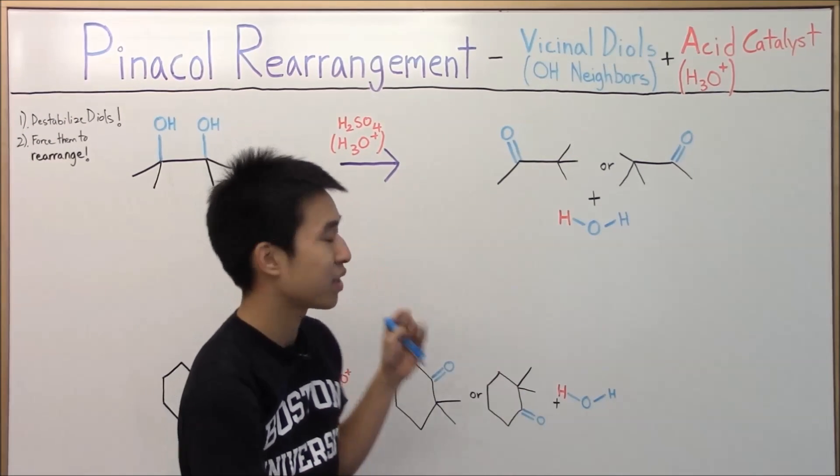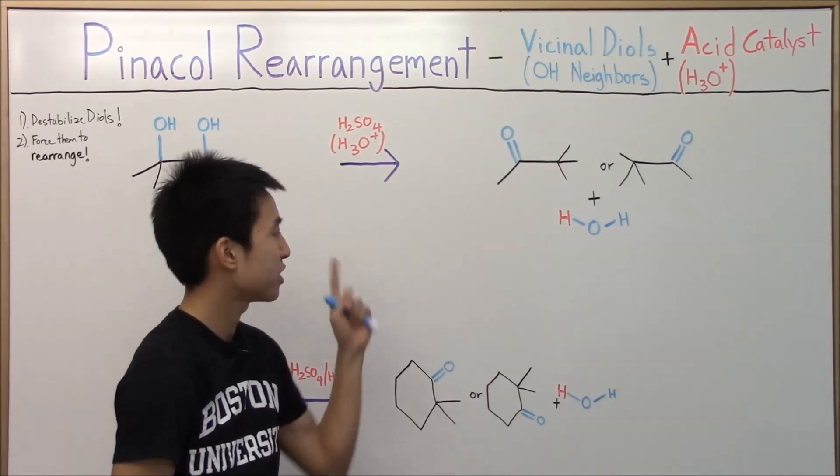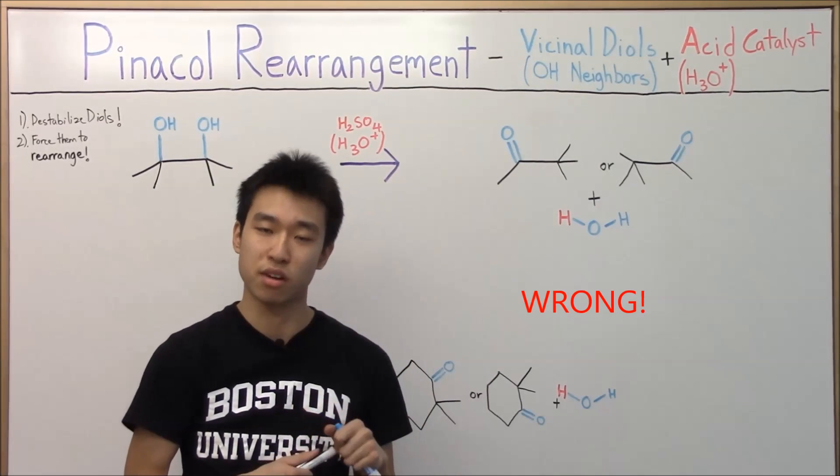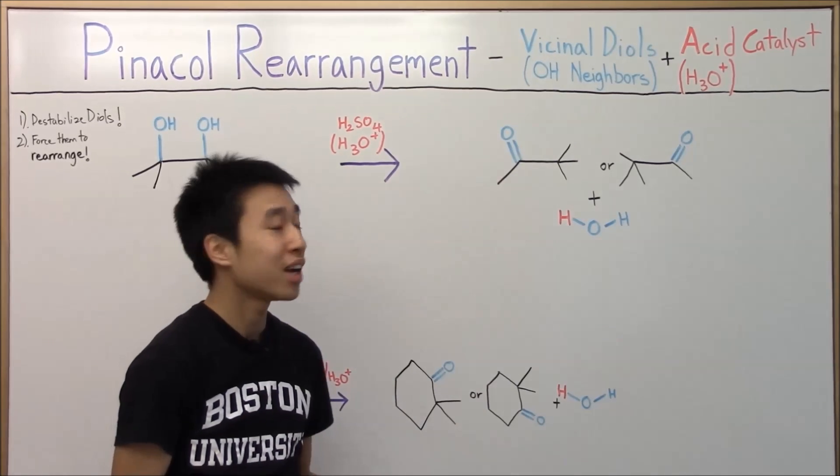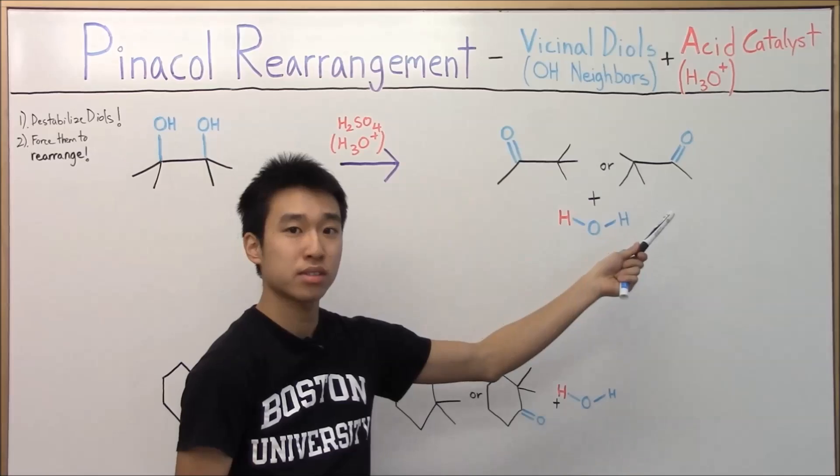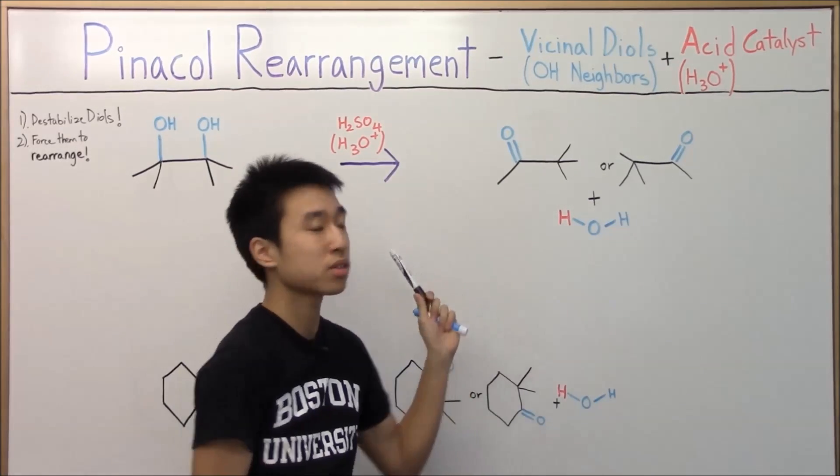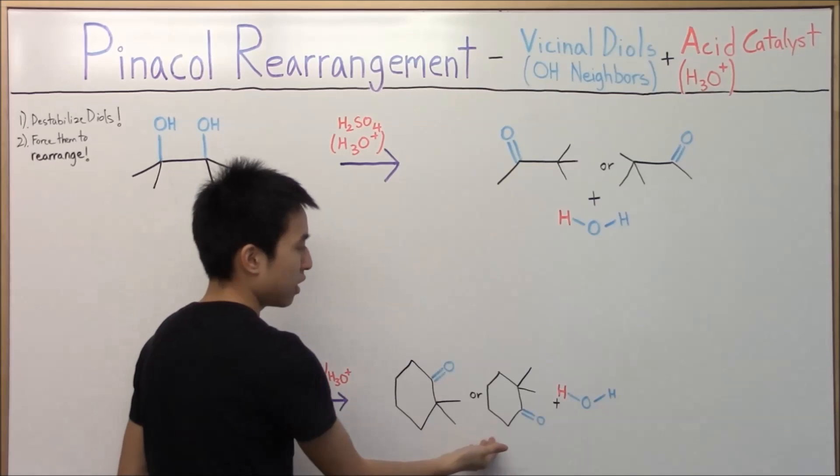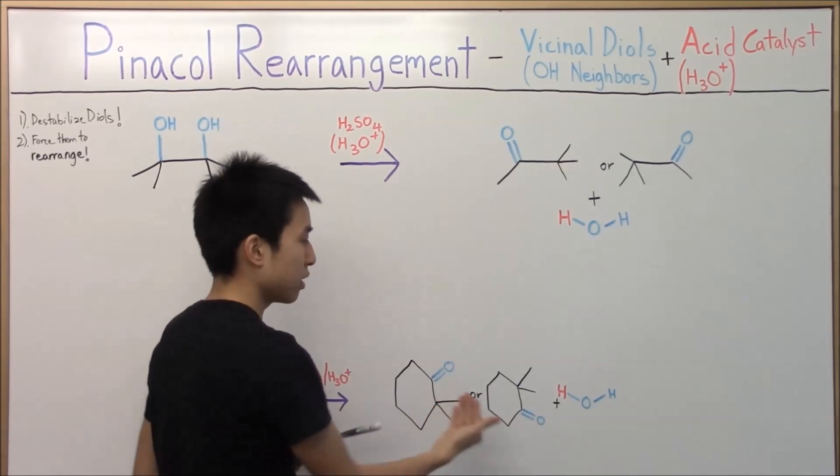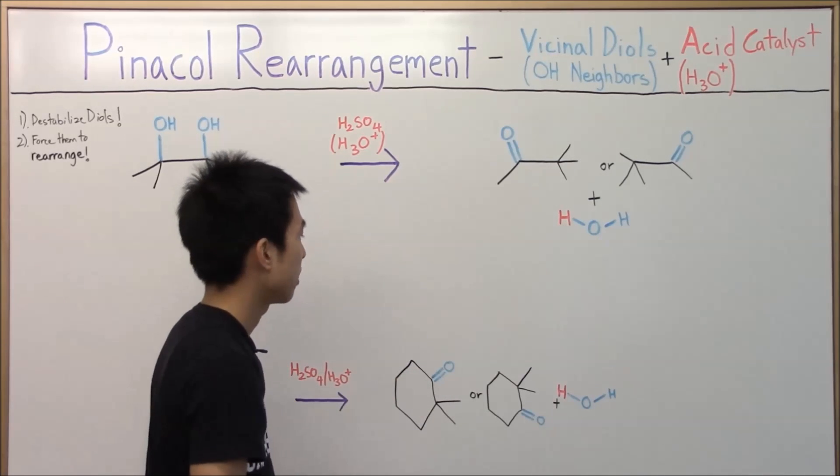All righty, these are the products that you guys should have gotten. Did you guys get these? If you didn't, then you're wrong, but who cares? Doesn't matter, we're just practicing. Anyways, so you should have gotten either this or this, and these are the same exact molecules, because you can just flip this over, and the same for this one. If there's no chiral centers in your product, then you can just flip it, and it'll be the same thing.